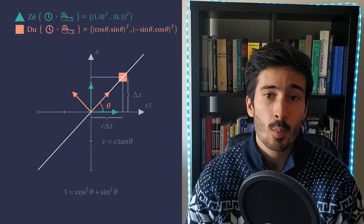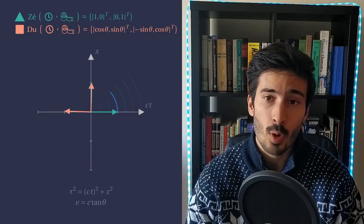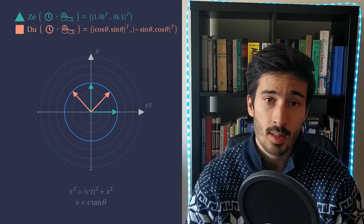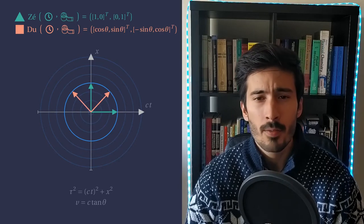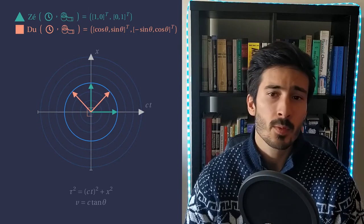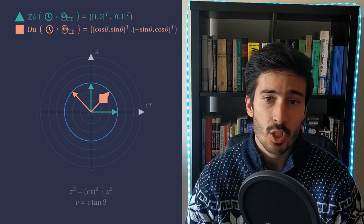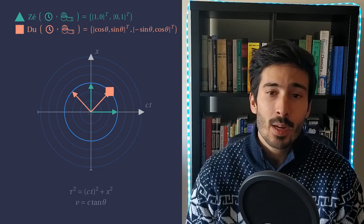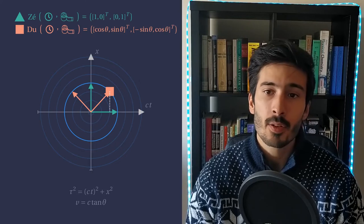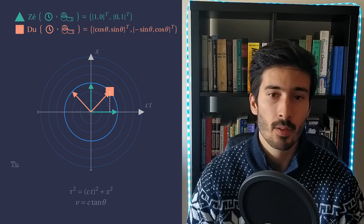If we now vary theta, we can see that the lines of constant proper time are circles, and we are prepared to answer a few questions using our model. First, if Du moves for one time unit, measured in his own clock, what does Ze's clock show at that moment? Well, we can see that the event occurred sooner for Ze, so time has contracted for him.